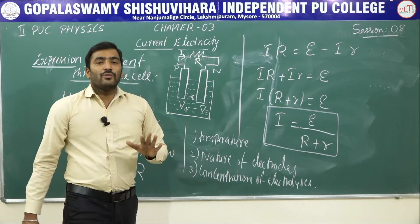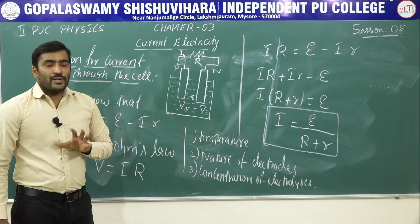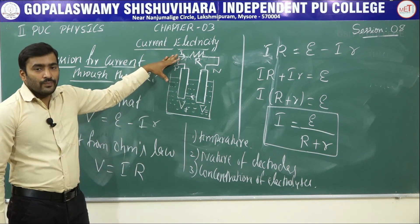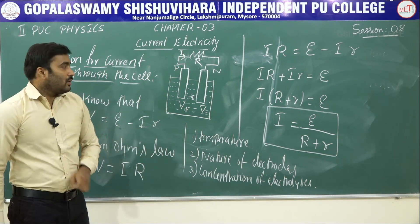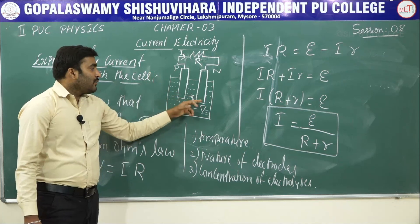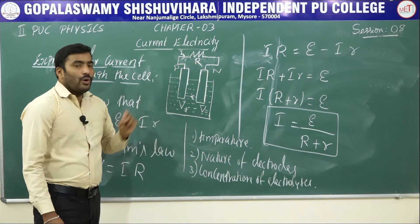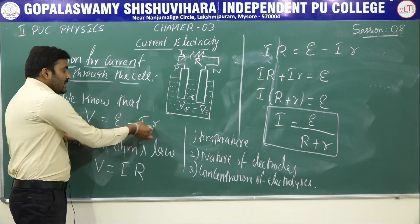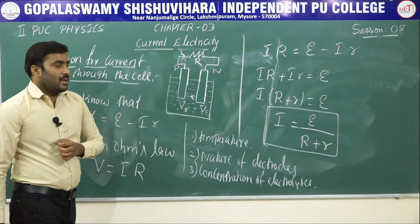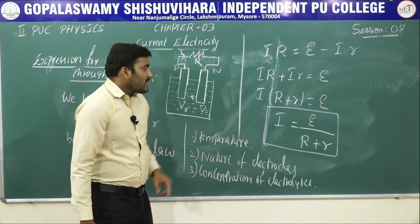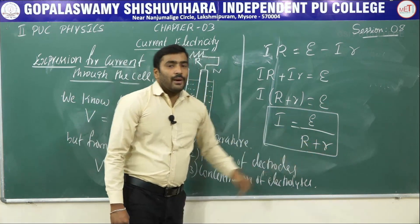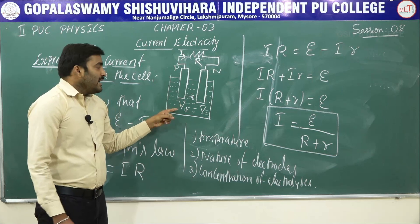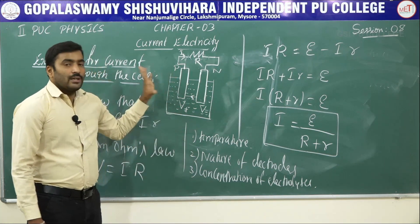So, to summarize: EMF is the potential difference across the ends of a cell in an open circuit. Terminal potential difference is the potential difference across the ends of a cell when current is flowing through it, given by V = E − I·r, where r is the internal resistance. The expression for current through the cell is I = E / (R + r), and internal resistance depends on temperature, nature of electrodes, and concentration of the electrolyte.